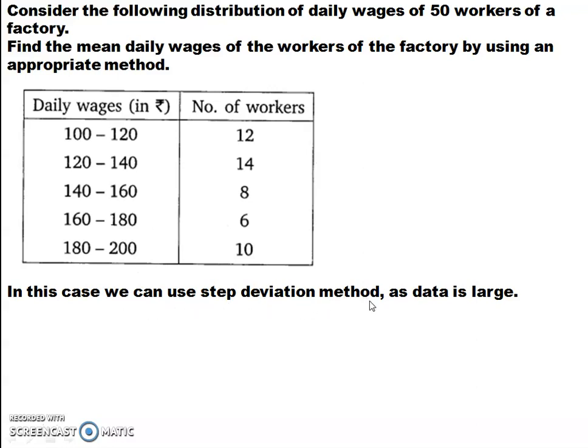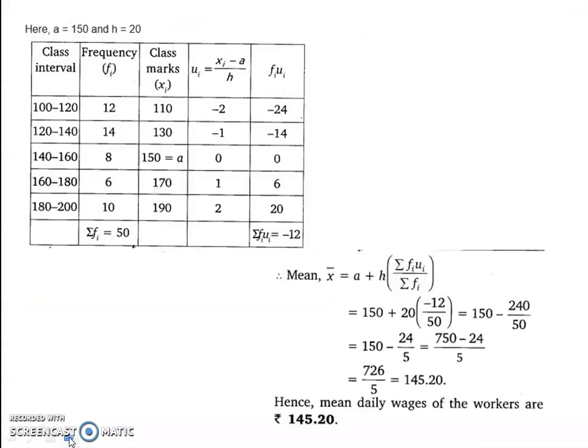In this case, we can use step deviation method as data is large. Let's see, step deviation method. Here, for step deviation method, the first step is to assume, first step is to find the class marks. Class marks, what is class mark? Upper limit plus lower limit divided by 2. 120 plus 100, 220 divided by 2, 110. Once again, upper limit plus lower limit divided by 2, 140 plus 120, 260. 260 divided by 2, 130. So, now, you have class marks, okay.